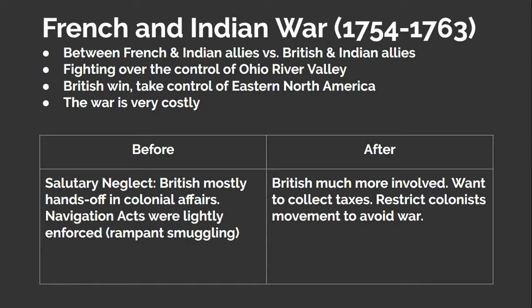This war was fought between the French and their Indian allies versus the British and their Indian allies. This was a global conflict, but for US history we are most concerned with the struggle for control of the Ohio River Valley, which lies west of the Appalachian Mountains. The British won the war, but it was very costly and they're going to need some extra revenue. Before the war, the American colonists enjoyed a degree of autonomy under a system of salutary neglect, in which the British allowed the colonists to run many of their own affairs in the colonies, including self-government, albeit with British oversight.